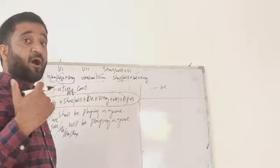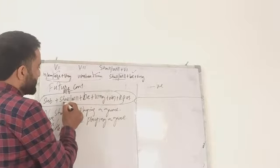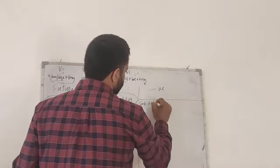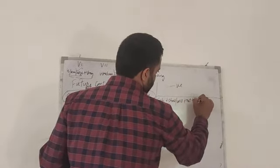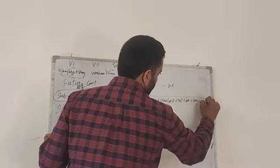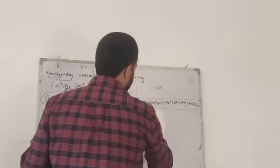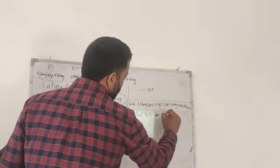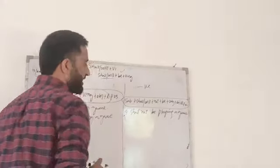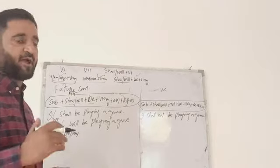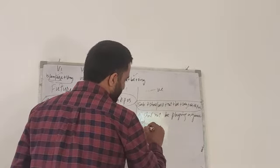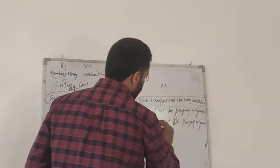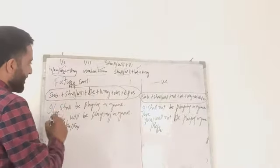For the negative structure of future continuous, after the auxiliary we use 'not.' Here we have two auxiliaries — shall/will and be. We place 'not' after shall/will. Structure: Subject plus shall/will plus not plus be plus verb in -ing form plus object plus remaining part of sentence. For example: I shall not be playing a game. We shall not be playing a game. You will not be playing a game. He will not be playing a game. She will not be playing a game.